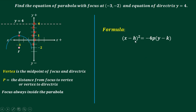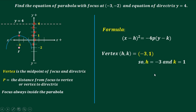We need to find the values of h, k, and p. In the parabola, the vertex gives us h and k. From the graph, our vertex is at (-3, 1), so h is -3 and k is 1. For p, the distance from the focus to the vertex is 3, so p equals 3.